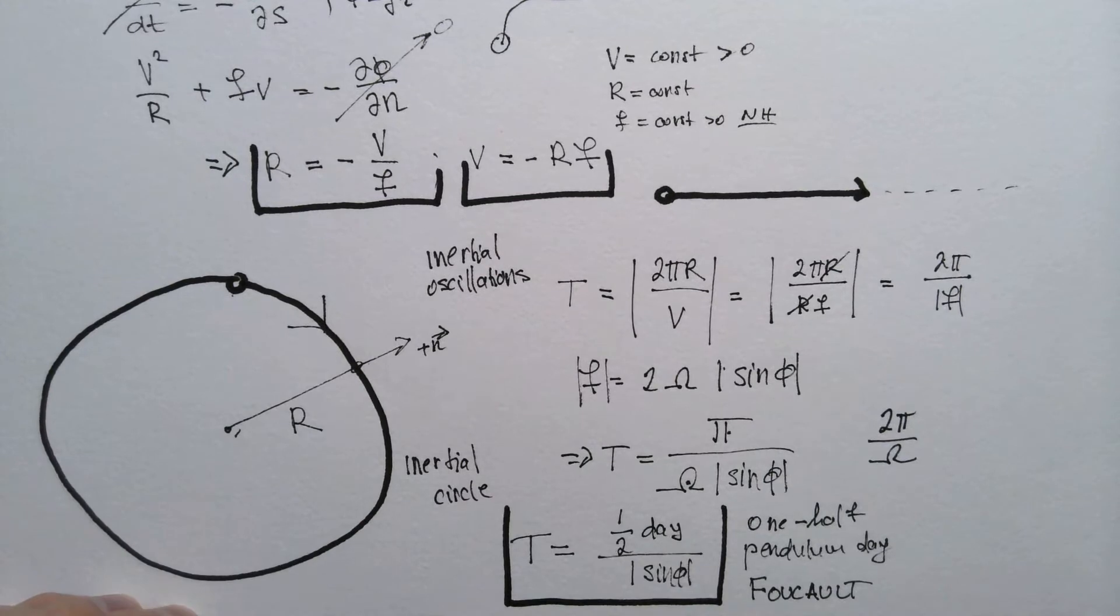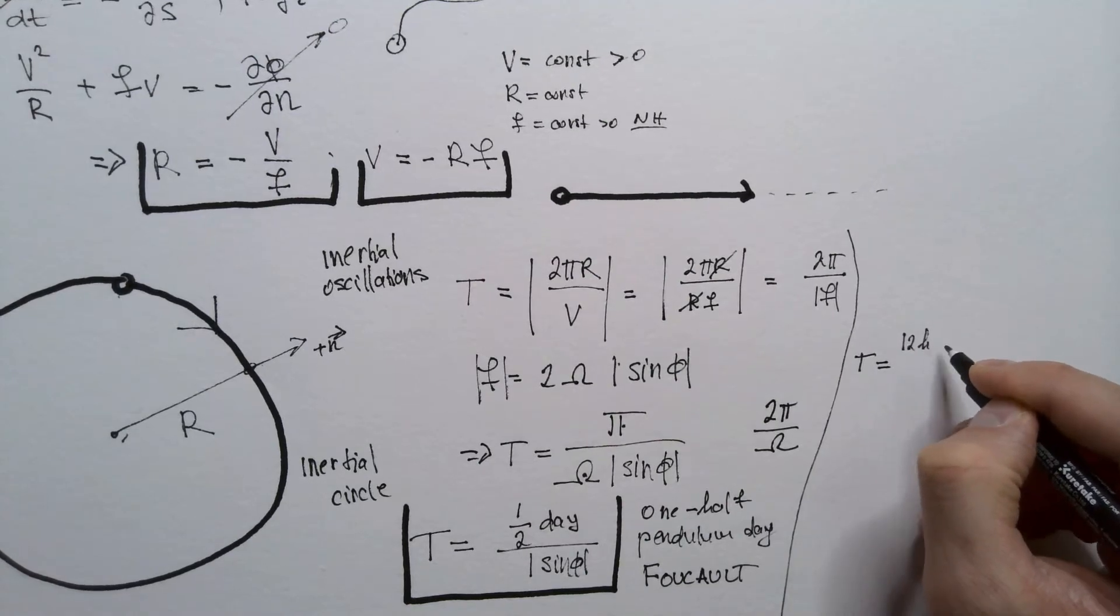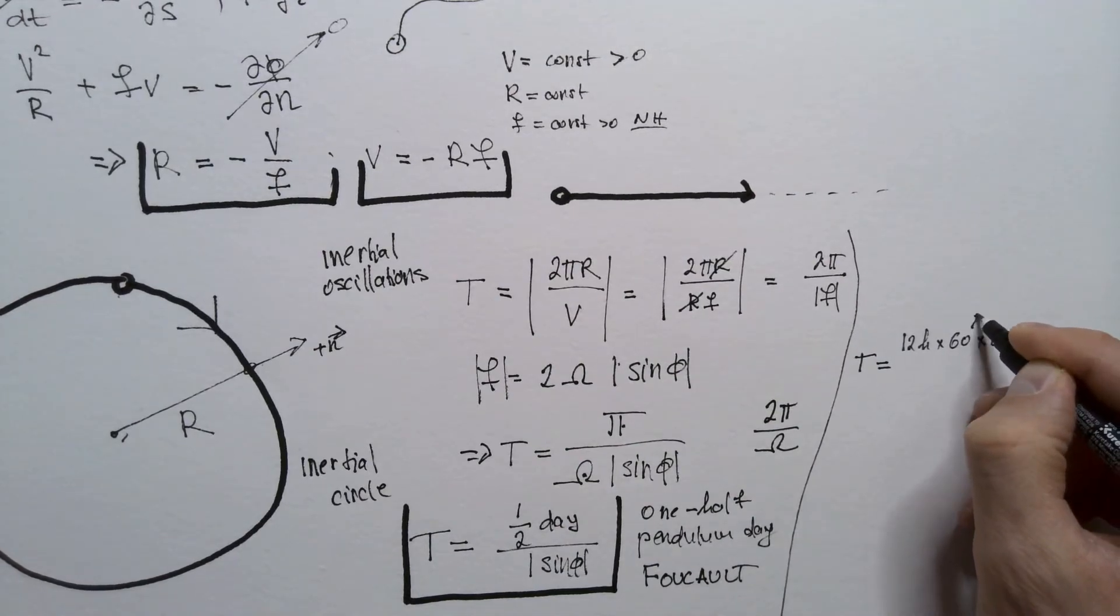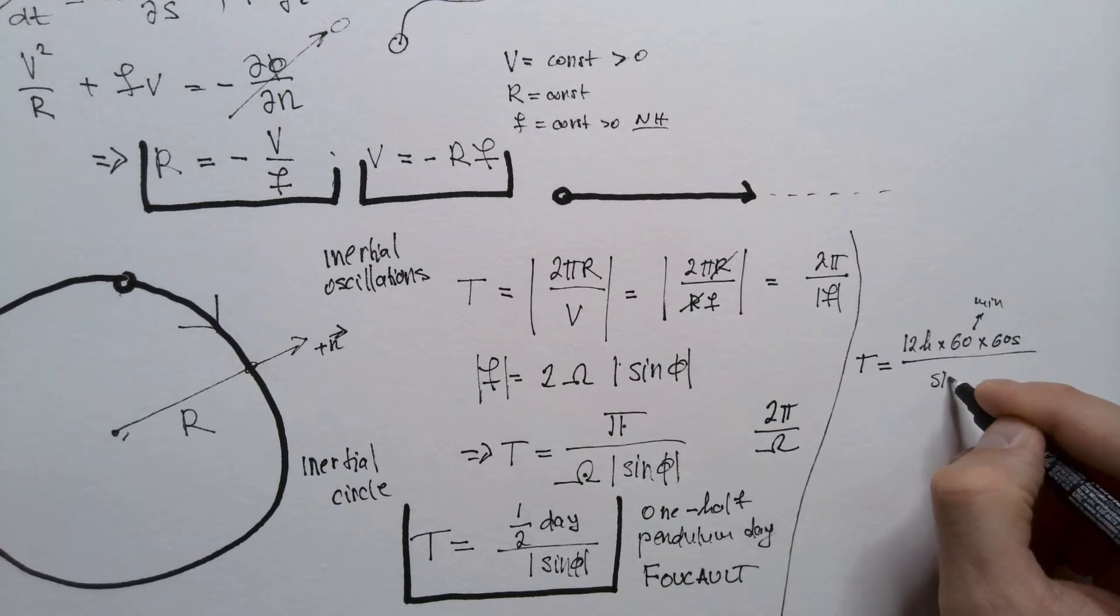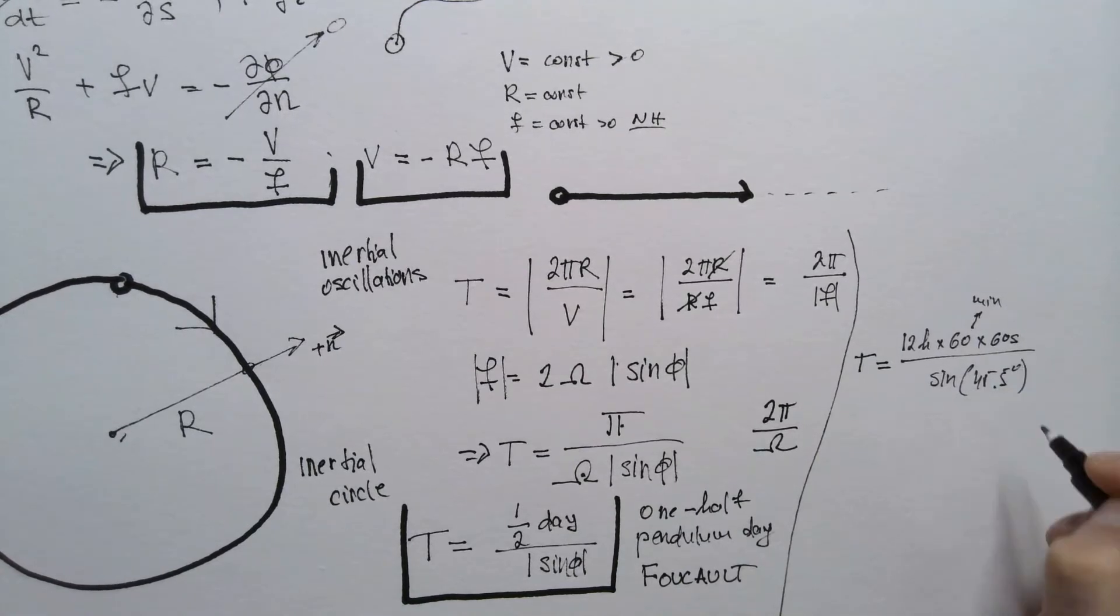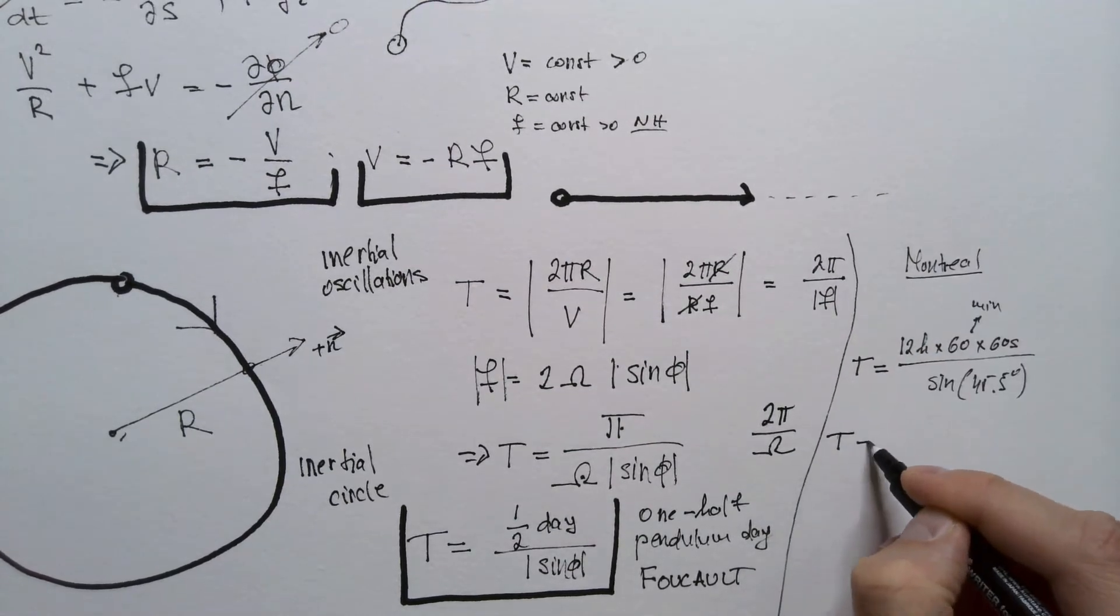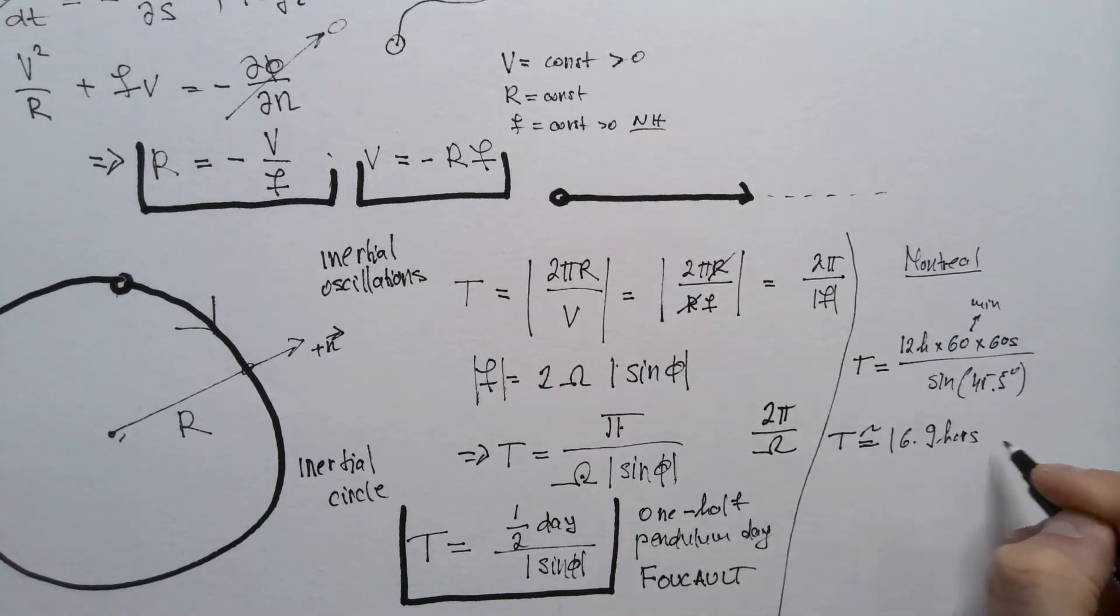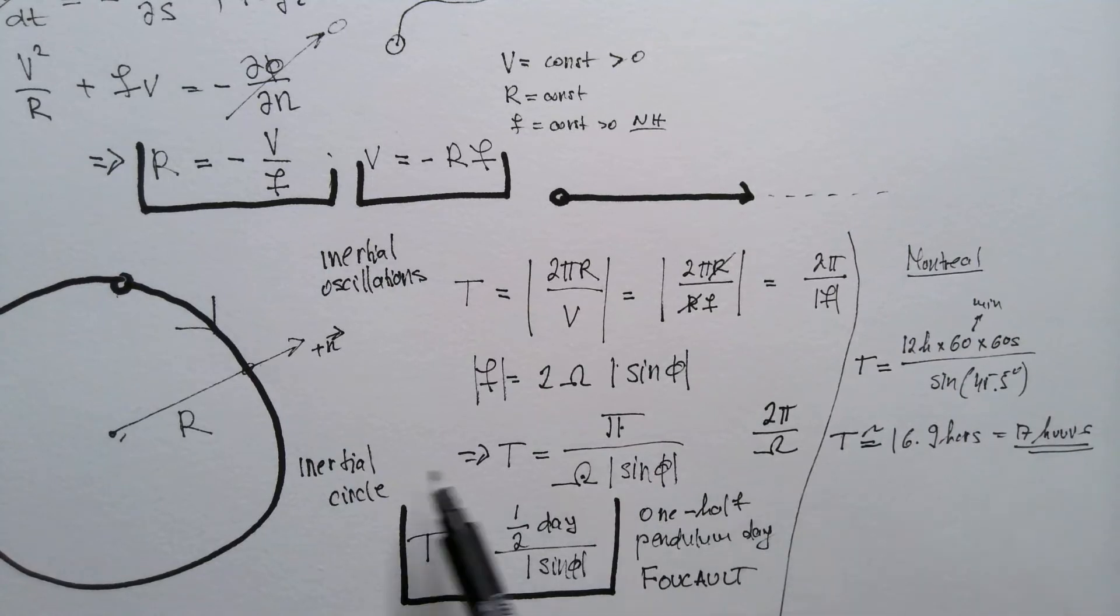So let's calculate this period, for example, for my city of Montreal. So in Montreal, T will be half a day, which is 12 hours times 60 minutes times 60 seconds divided by sine of 45.5 degrees. That is latitude of Montreal. Which means T, if you calculate these numbers, ends up being approximately 16.9 hours, which is basically 17 hours. So this would be period of these inertial oscillations above Montreal.